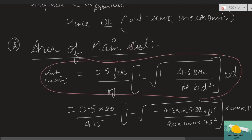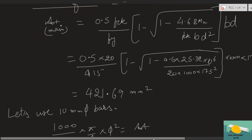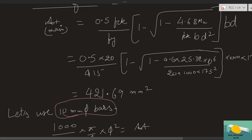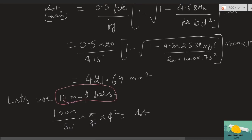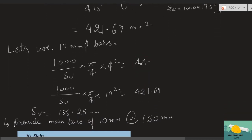Now calculate area of main steel. Applying the formula for Ast with the appropriate values, we get Ast_required = 421.69 mm². Now for spacing: using 10 mm diameter bars, spacing = (1000 × π/4 × 10²) / 421.69 = 186.25 mm.